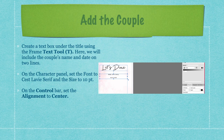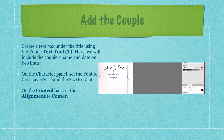Create a text box under the title using the frame text tool. Here we include the couple's name and date on two lines. On the character panel set the font to Sailor V Serif and the size to 10 point. On the control bar set alignment to center. As an example, enter 'Bobby Joe and Becky' and '6/5/22.' These are just marker characters — the name and date will change since you're making a template.